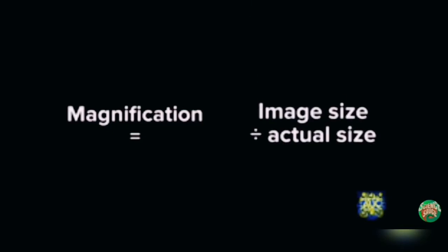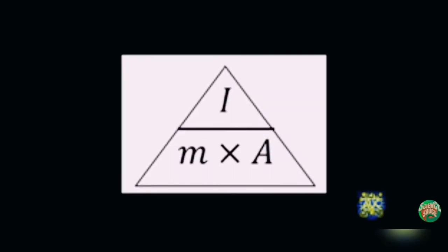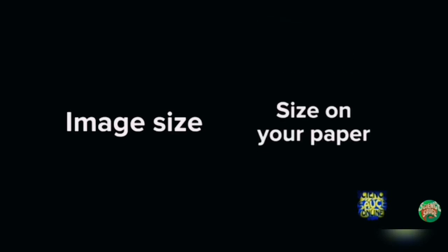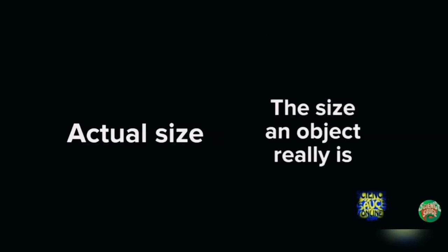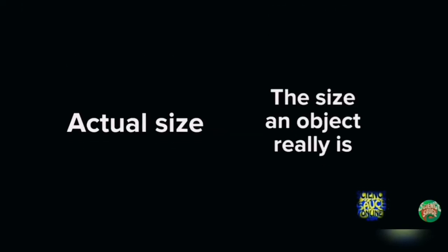So we are going to see this triangle method which shows us the formula of calculating the magnification. Image size is basically the size on the paper which we can see easily and which we can view. Moreover, the actual size is the size an object really is, its actual size in reality.